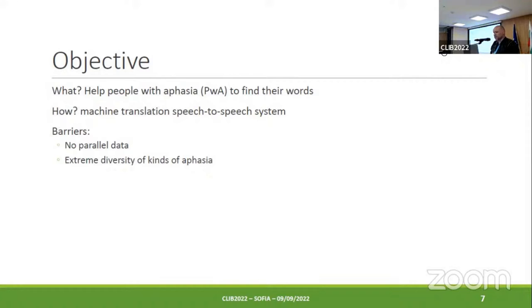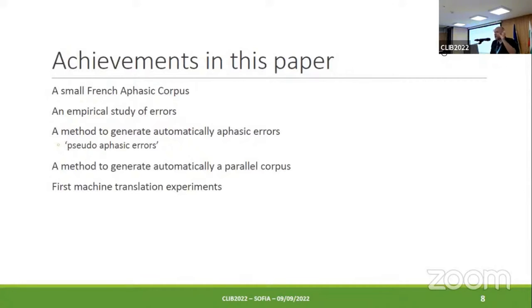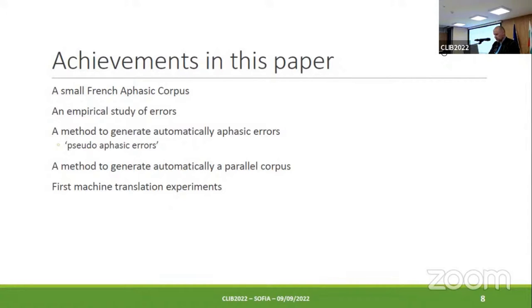In this paper, what we propose is a very small French aphasic corpus. We propose an empirical study of the errors in this corpus, and a method to generate automatically aphasic errors. The errors we generate are not really aphasic errors, so we call them pseudo-aphasic errors. We propose a method to generate automatically a pseudo-aphasic parallel corpus, and we present very first machine translation experiments.